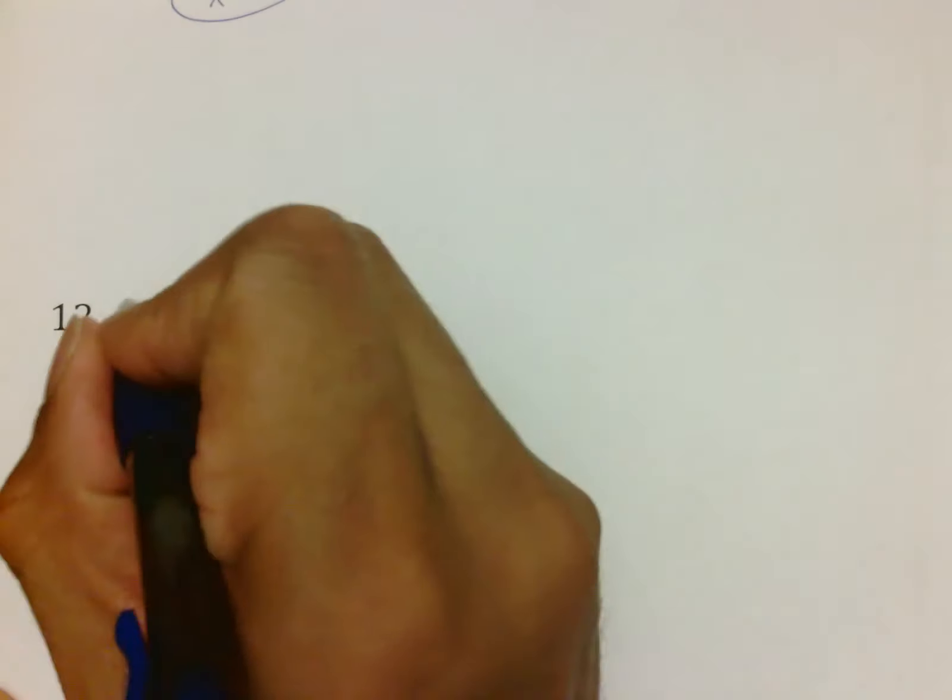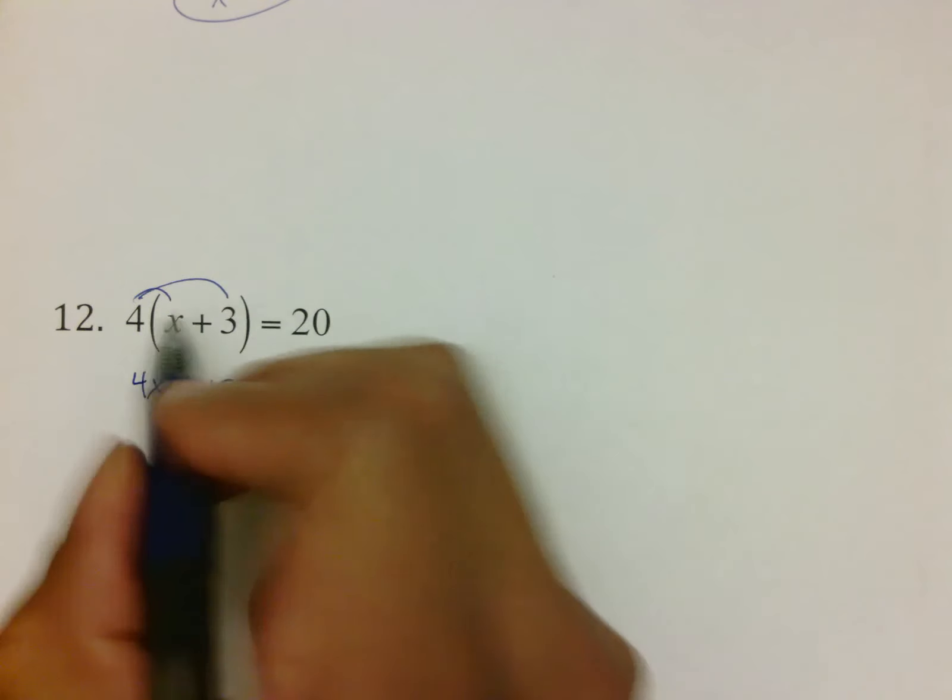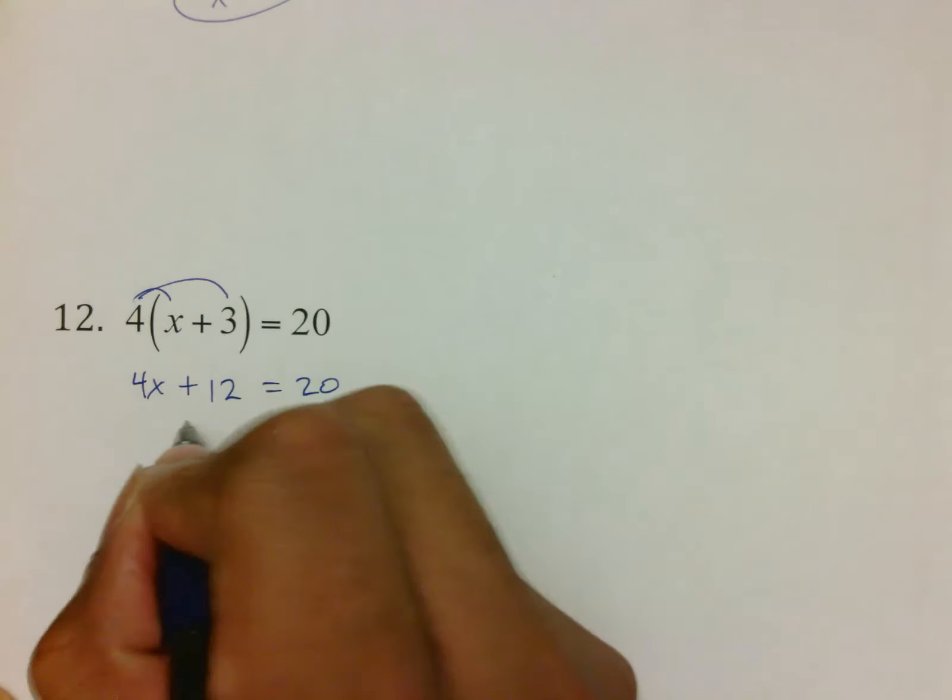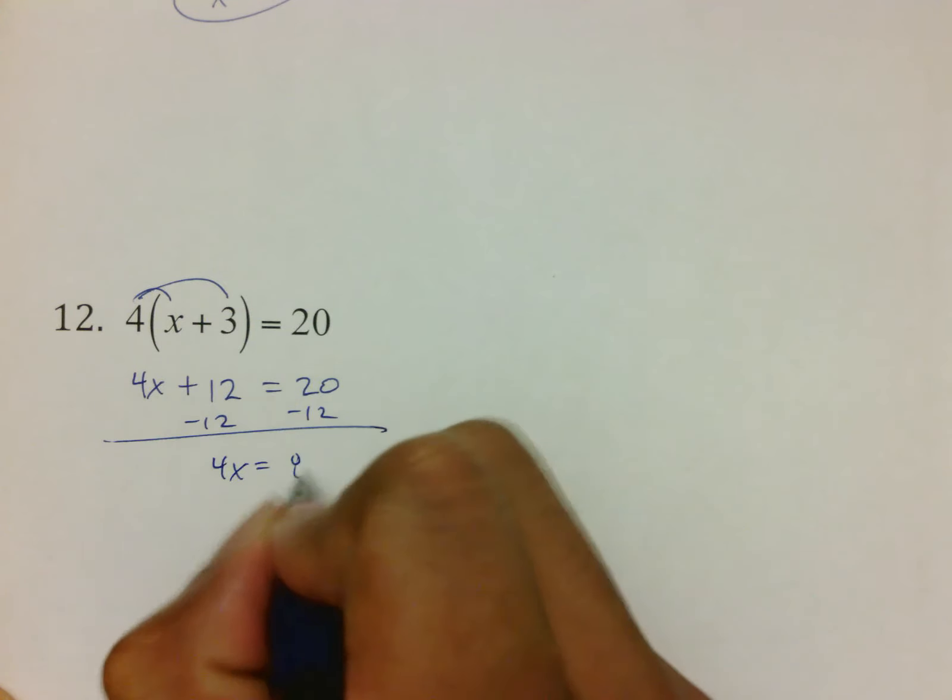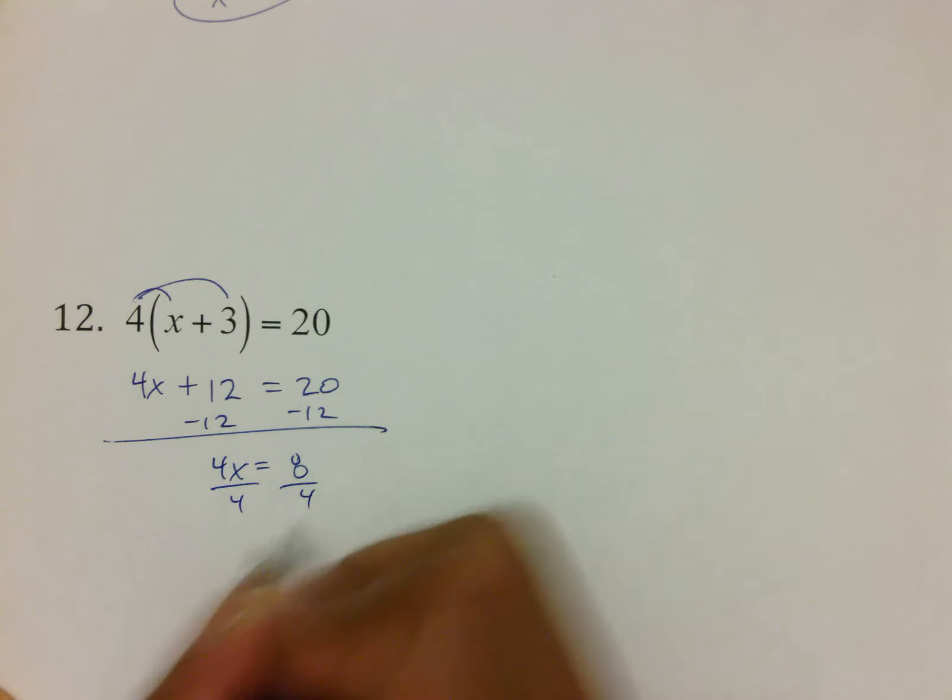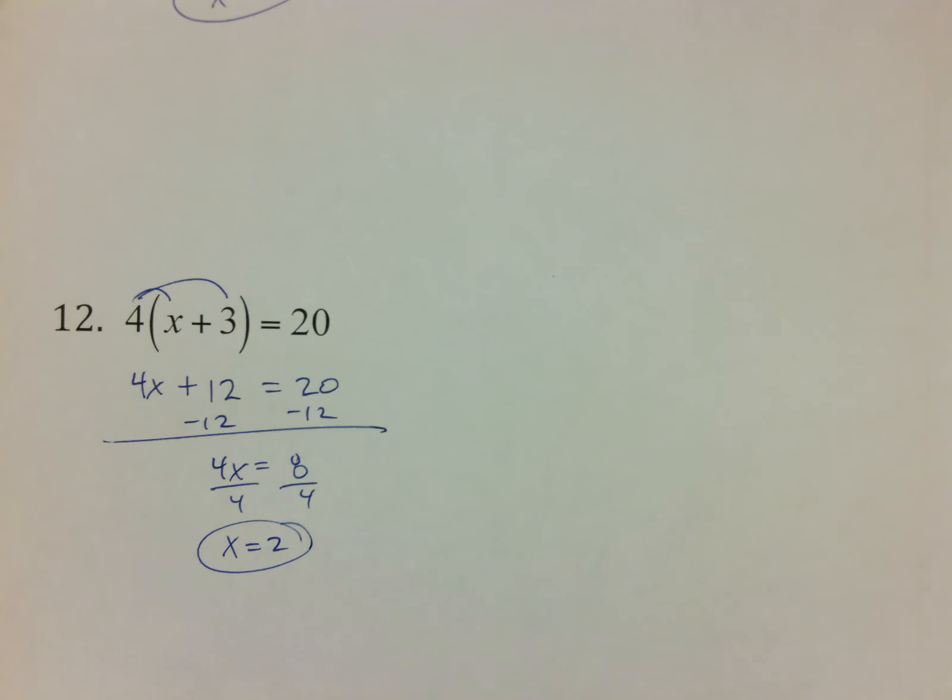Number 12, distribute first. Don't forget, it's not 4X plus 3. It's 4X plus 12 equals 20 because you've got to do 4 times 3 on that one. Subtract 12 from both sides, bringing down 4X equals 8, and then dividing by 4 on both sides to get X is equal to 2. Keep in mind, you want to circle any questions that are problems that you know you've missed or problems that you can't really remember as well. That way, you have something on your study guide to remind you on where you need to study the most.